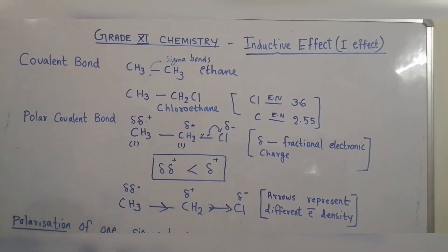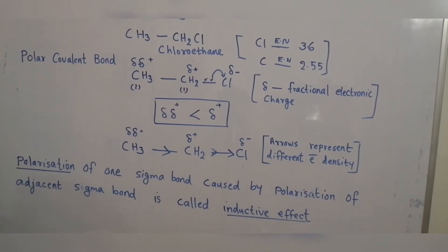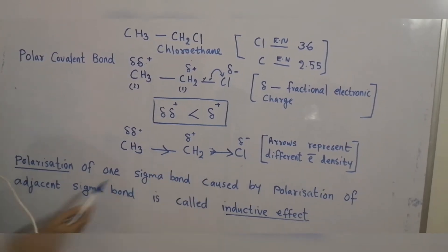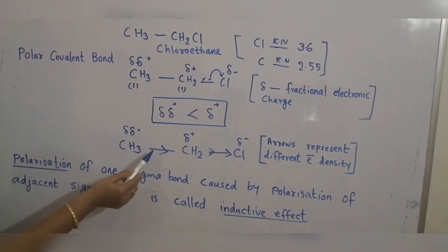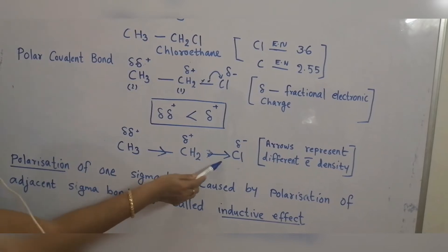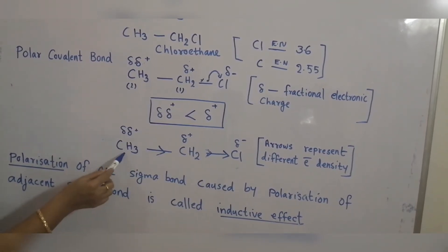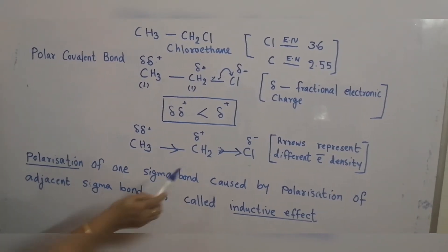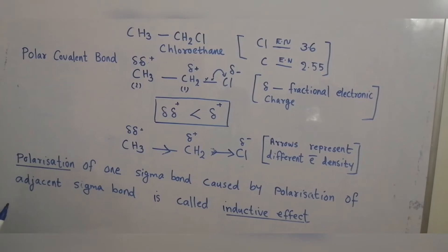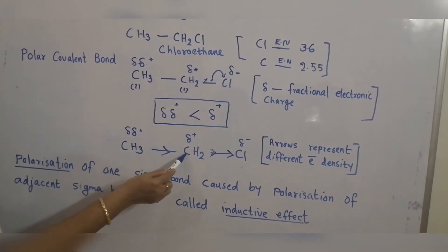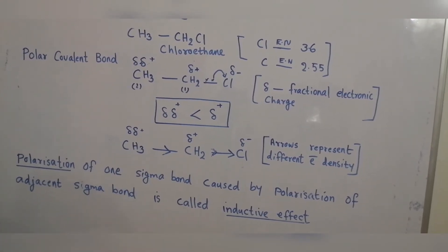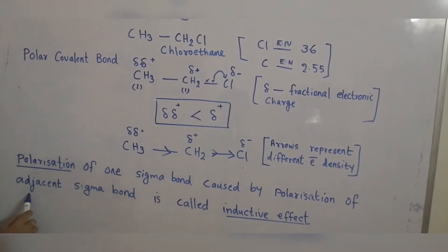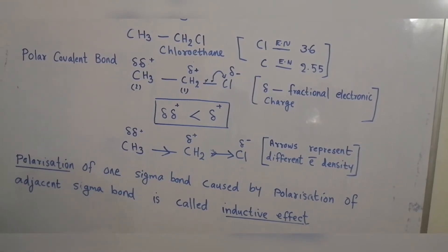These arrows represent different electron densities. The double arrow shows there is more electron density, and the single arrow shows electron density is less. So as the distance increases from the carbon-chlorine bond, electron density also decreases. Polarization of one sigma bond induces polarity in the neighboring carbon-carbon bond, and this is called the inductive effect. Polarization of one sigma bond caused by polarization of an adjacent sigma bond is called inductive effect.